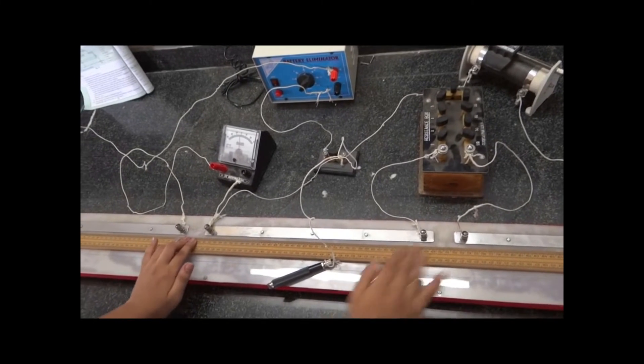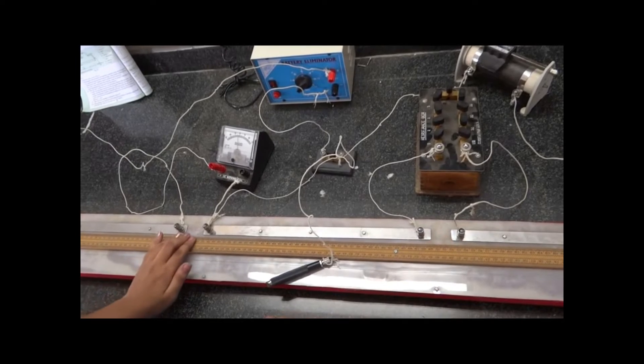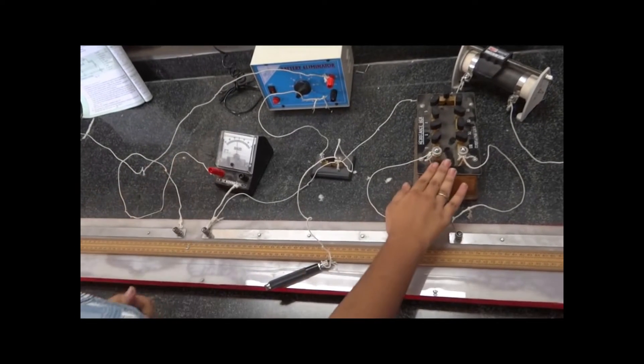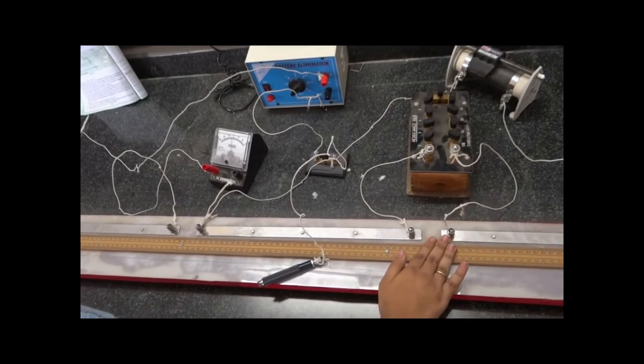Here this is the first arm and this is the second arm. The first arm is connected to the galvanometer and the second arm is connected to the resistance box.